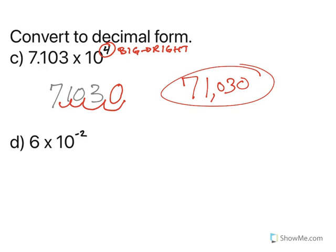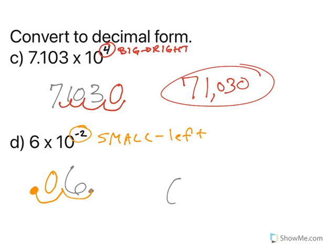And letter D. When I have a 6, if you don't see the decimal, it comes at the end of the number. So my exponent here is a negative 2. Well, negative means small. Which way do I move to make it smaller? I'm going to move it to the left. One, two. That's where my decimal point goes. One hump means one zero. So my final number is 0.06.